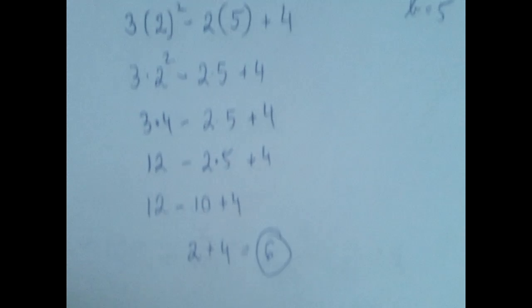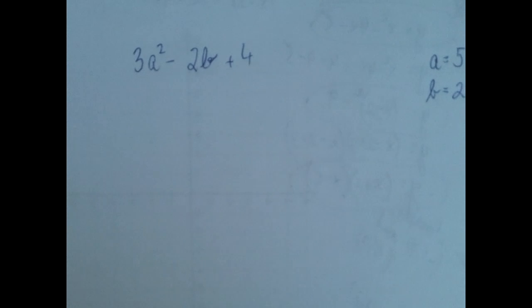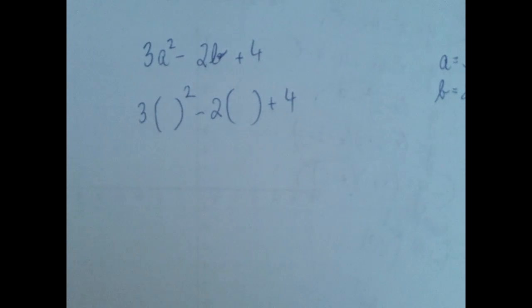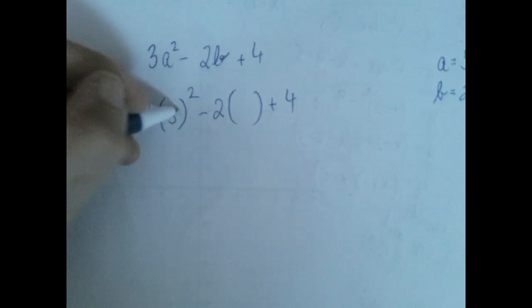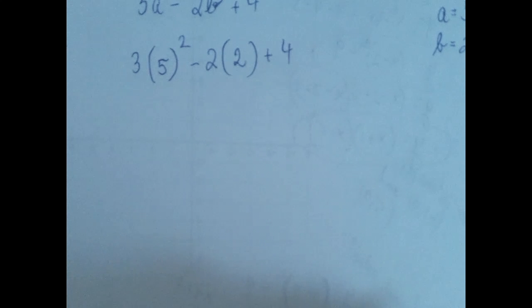Let's see another one. So we need to evaluate the same algebraic expression, but this time a is 5 and b is 2. We first copy the expression where we replace the variables with cute little pairs of parentheses, and then we copy the values of the variables in there. And just like before, we get an order of operations problem.